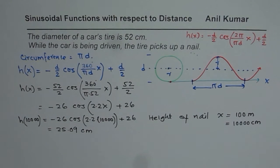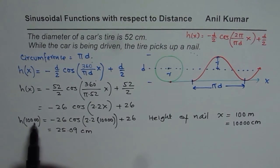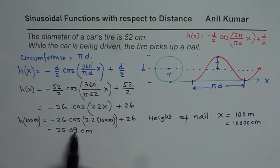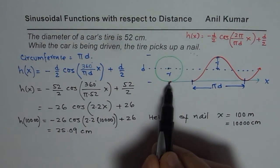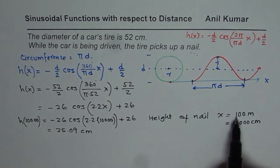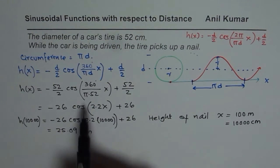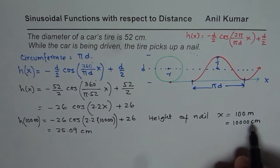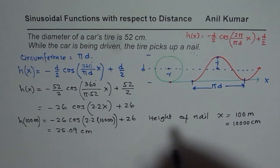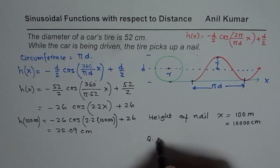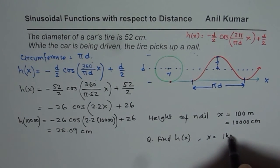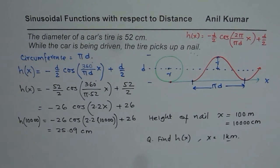What we are saying is that the height of the nail will be 25.09 centimeters when the tire has moved 100 meters. That is how you can find height of the nail for different distances. As a test question, you could find height of the nail when x is equals to one kilometer. That could be your exercise to do.